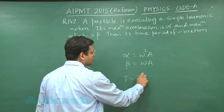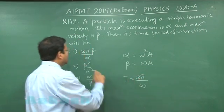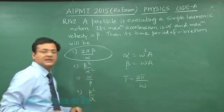Time period is 2 pi by omega, that you can calculate, and you will be getting the answer 2 pi beta by alpha.